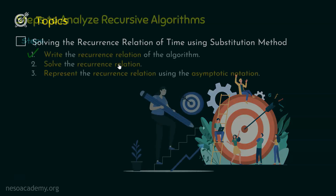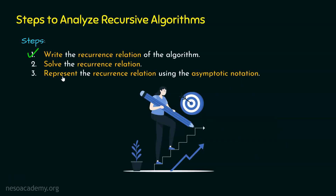Let's see those steps once again. These are the steps involved in analyzing recursive algorithms: step one is to write the recurrence relation, step two is to solve it, and step three is to represent the result using asymptotic notation. We completed step one in the previous lecture. Now let's proceed to solve the recurrence relation of the factorial function using the substitution method.